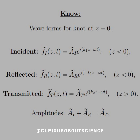The reflected wave also exists to the left of Z equals zero but with a new coefficient AR. The transmitted wave passes to the other side of the knot with new string constant K2, to the right of the boundary at Z equals zero. The incident amplitude plus the reflected amplitude must equal the transmitted amplitude — energy conservation.